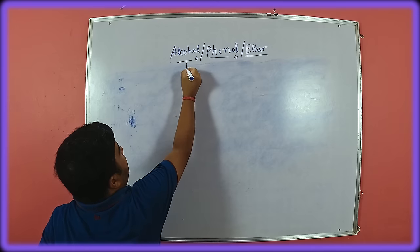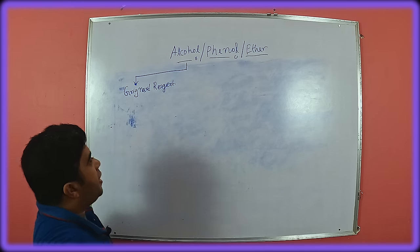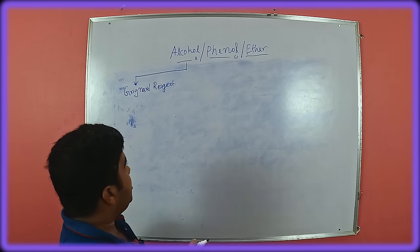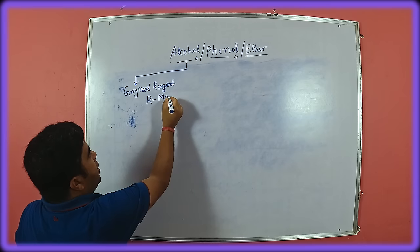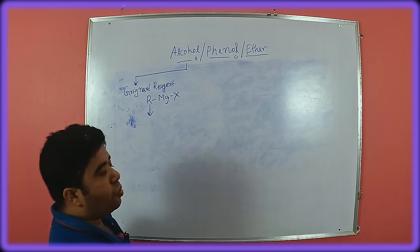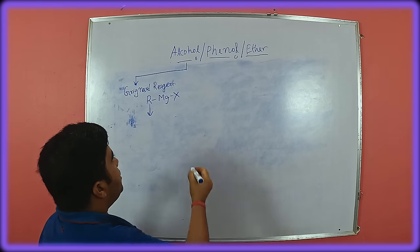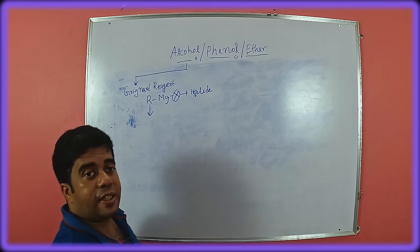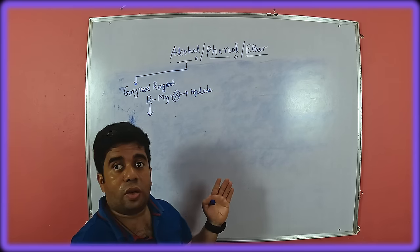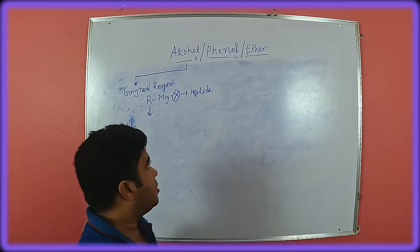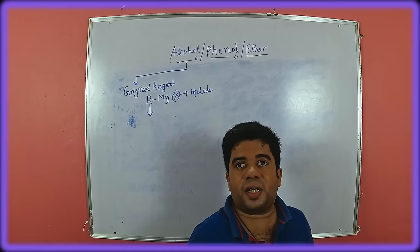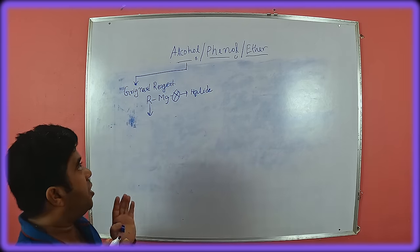Next is Grignard reagent. Grignard reagent is a very important organometallic compound known as R-MgX. Here R can be changed accordingly and X is halide. This Grignard reagent is added to carbonyl compounds — either aldehyde, ketone, carboxylic acid, or ester. By Grignard reagent, one thing you must remember: any kind of alcohol — primary, secondary, or tertiary — we can synthesize.